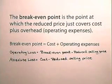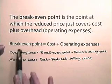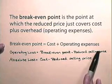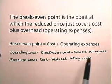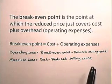Now let's define the terms associated with loss, and we will look at a couple of exercises involving loss. The break-even point is the point at which the reduced price just covers cost plus overhead, overhead being the operating expenses. The break-even point equals cost plus operating expenses. An operating loss equals break-even point minus reduced selling price. And an absolute loss equals cost minus reduced selling price.